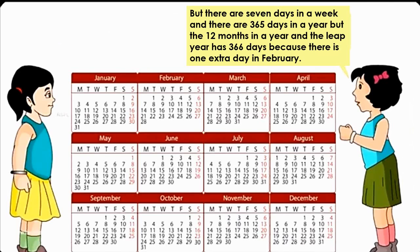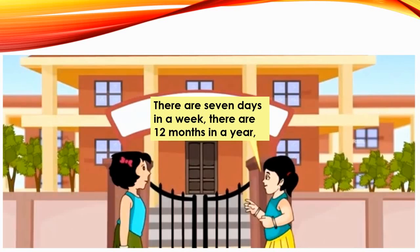There are 7 days in a week, and there are 365 days in a year. But there are 12 months in a year. And the leap year has 366 days, because there is one extra day in February. Students, do you know what leap year means? Leap year means it is a calendar year that contains an additional day. There are 7 days in a week and 12 months in a year.